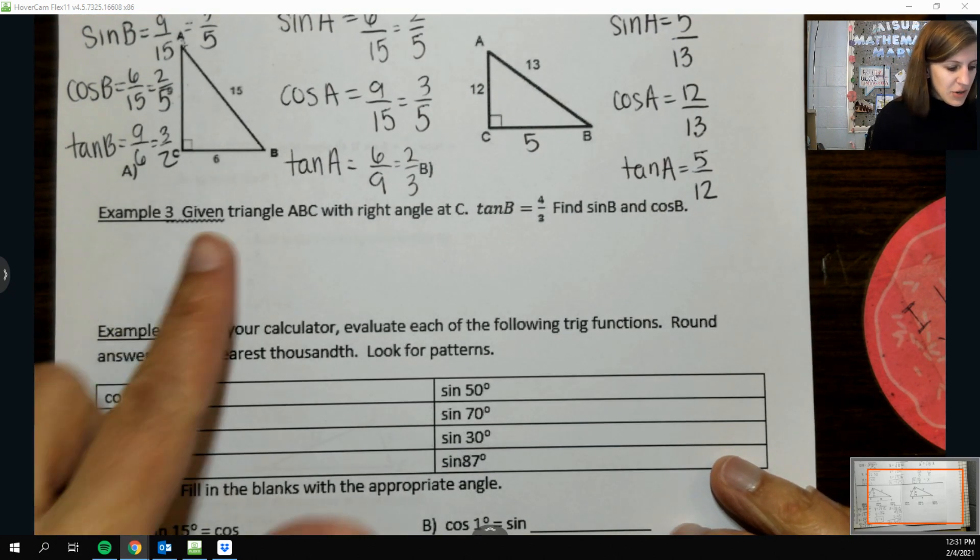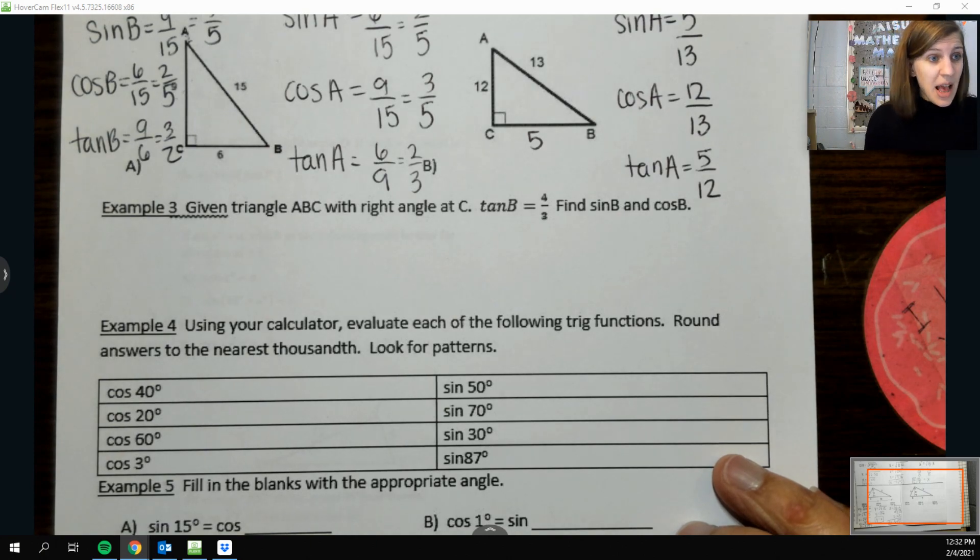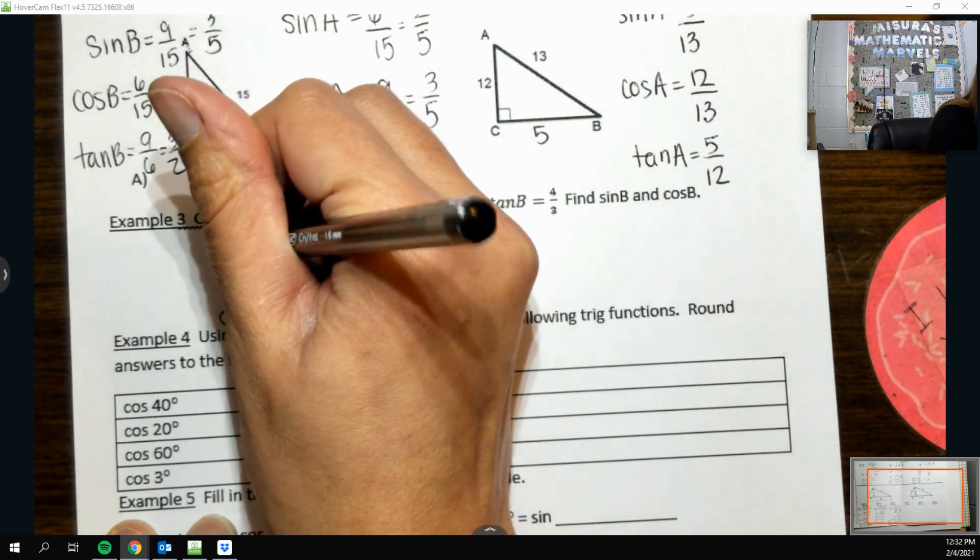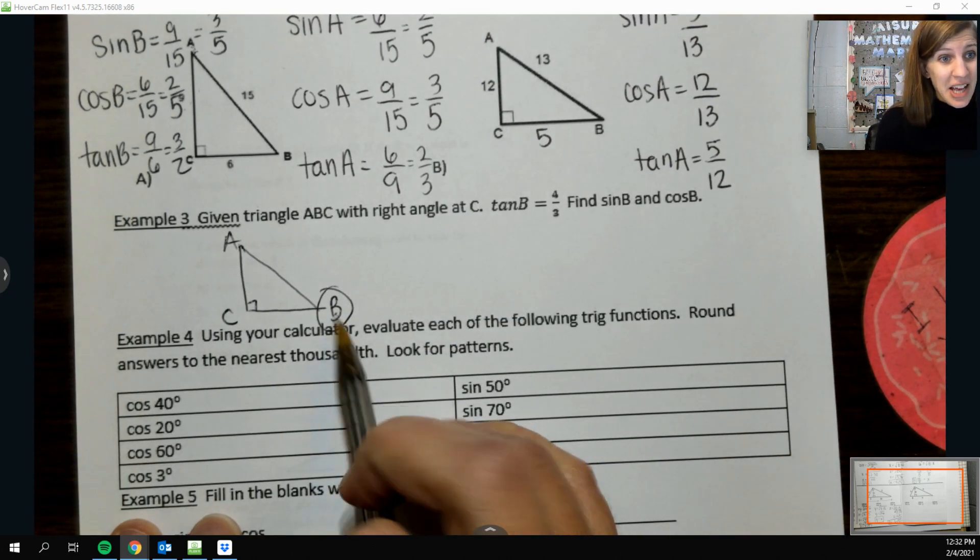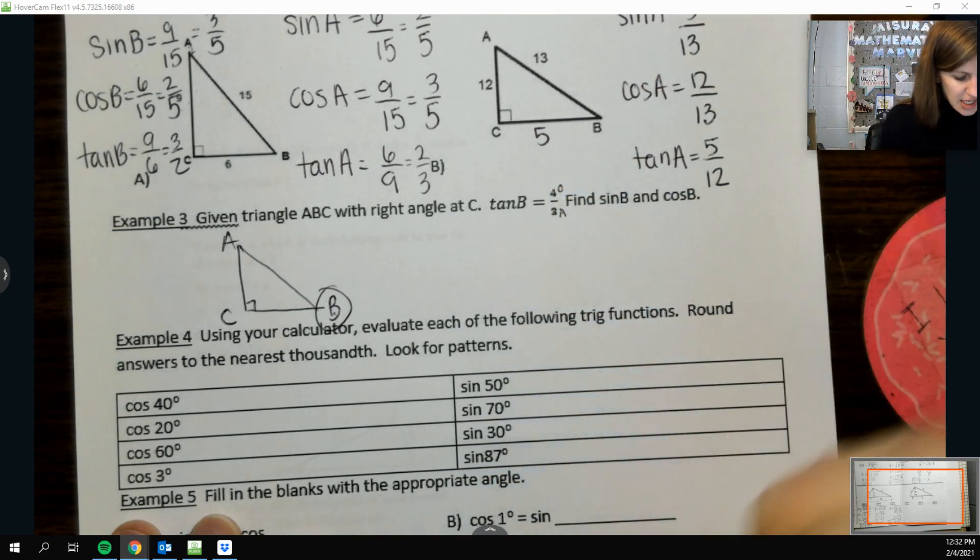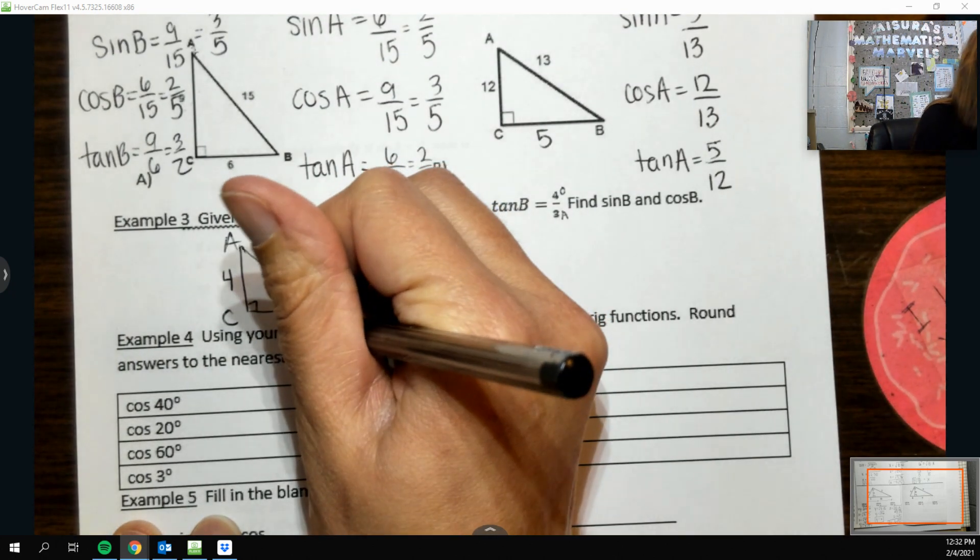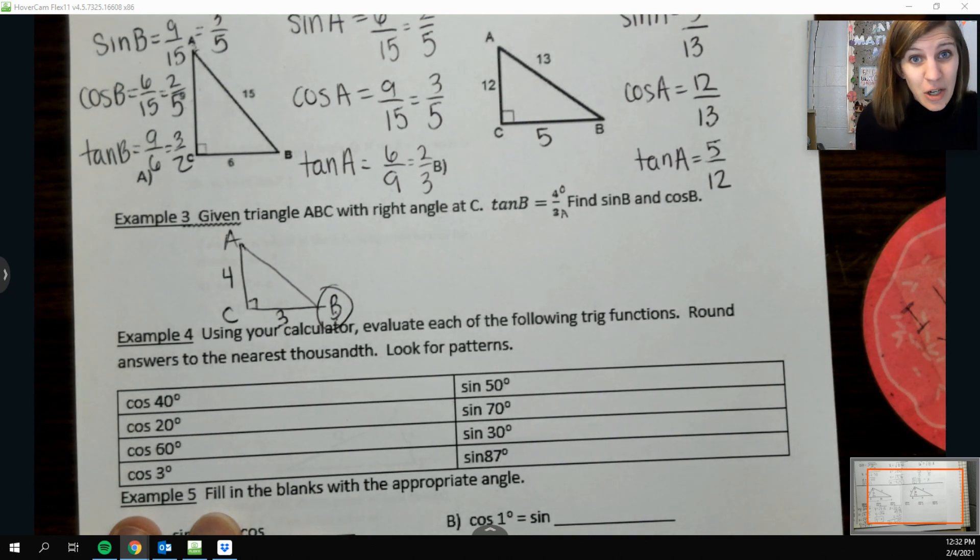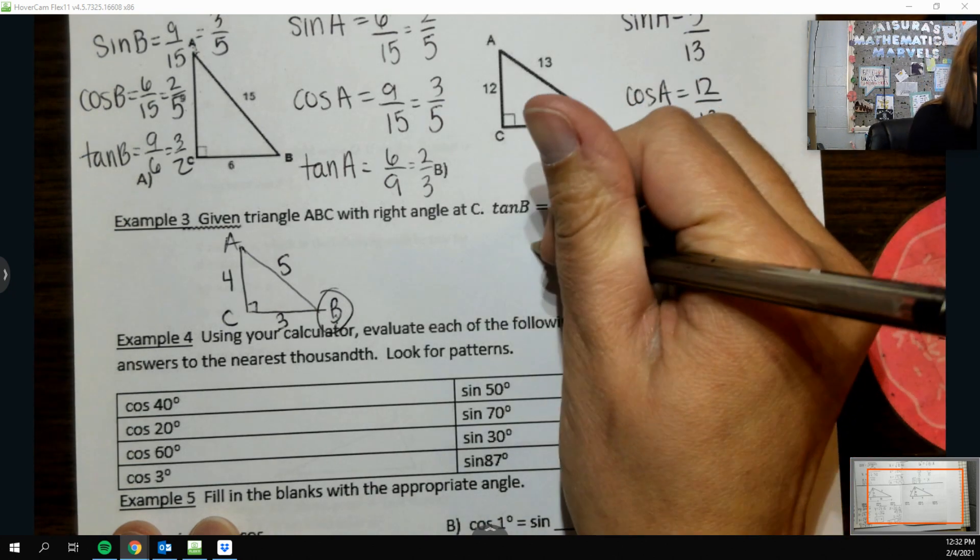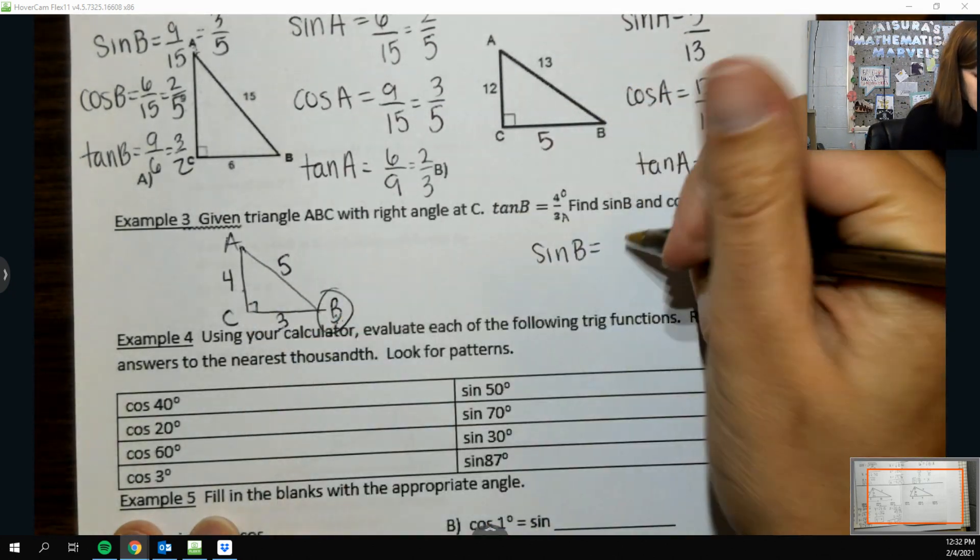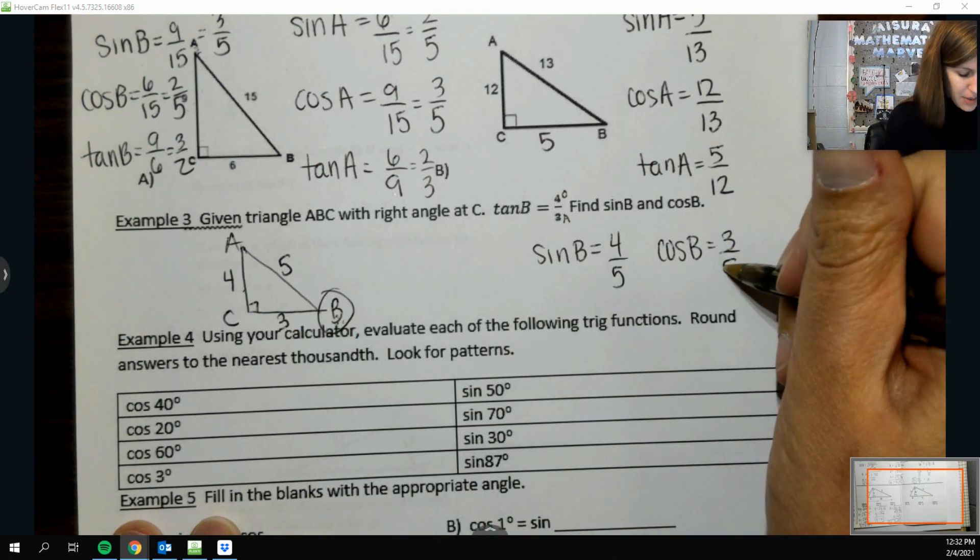So this question is so fun. Given that triangle ABC has a right angle at C, and tangent of B is 4 over 3, find sine of B and cosine of B. It kind of feels like I don't have enough information, but you really do. If I know that B has a tangent of 4 over 3, I know that tangent's ratio is the opposite side over the adjacent side. So that means opposite of B is a side length of 4. And adjacent to B and not the hypotenuse is 3. You got Pythagorean theorem that you can always use. And if you know those triples, you know that 3, 4, and 5 are a pair. So now I know the hypotenuse, which is what I needed to be able to find sine of B and cosine of B. So sine of B is opposite of B, which is 4, over the hypotenuse, which I found is 5. And then cosine of B is adjacent to B, 3, over hypotenuse, 5.